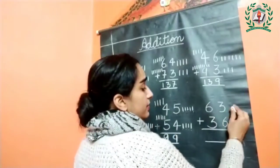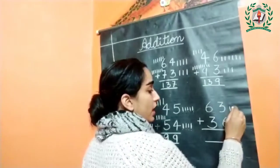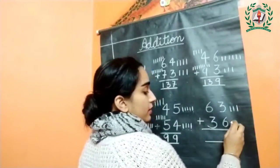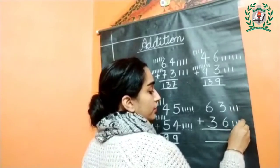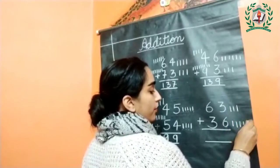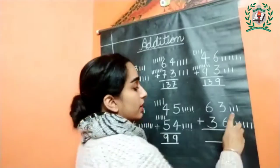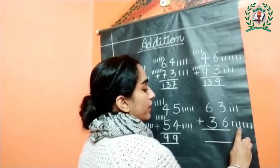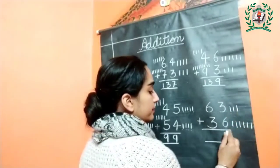And the next is three: one, two, and three. Six: one, two, three, four, five, and six. Count together: one, two, three, four, five, six, seven, eight, and nine.